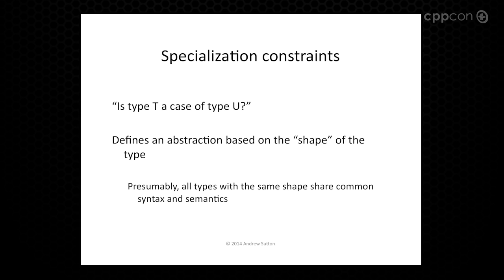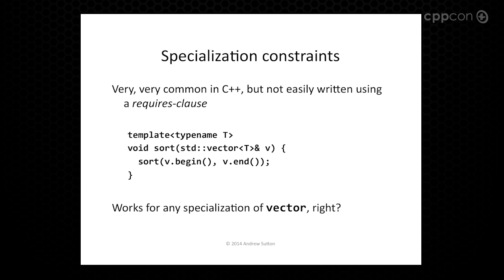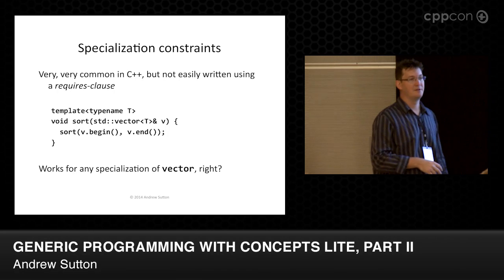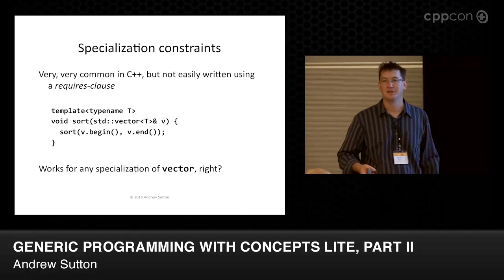We also have cases like: is type T a case of U? Here we're defining an abstraction based on the shape of the type — how you spell it — and presumably all such types share the same syntax and semantics. There's really no good way to spell this as a constraint; it's not easy to write a type trait called is_template_specialization_of. You can do it in special cases, but there's sort of an implied constraint on a function that whatever argument you supply must be a specialization of, say, vector<T>.